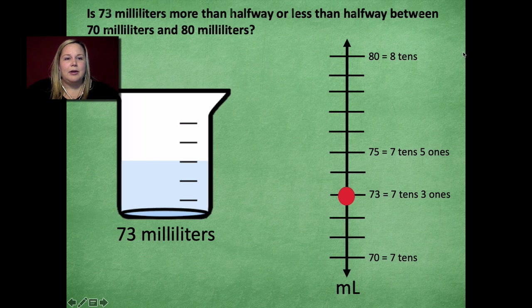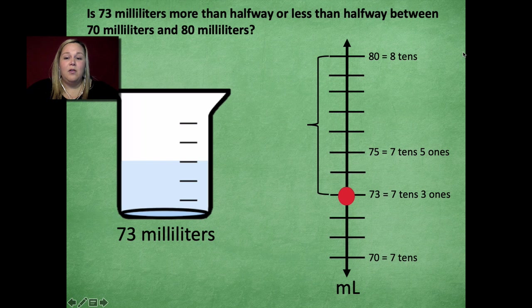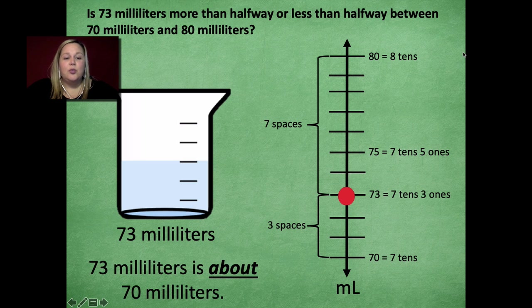Okay, so now my question is, is 73 milliliters more than halfway or less than halfway between 70 milliliters and 80 milliliters? So the way that I can kind of figure this out, friends, is I draw like these little brackets. So in between, from all the way from 73 to 80, there's seven spaces. From 70 to 73, there's only three spaces. So that means it's closer to 70 than it is to 80. So we would say that 73 milliliters is about 70 milliliters.